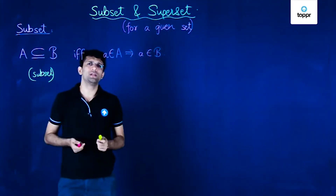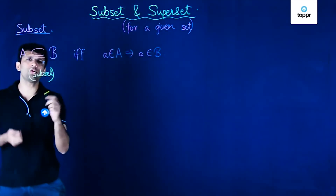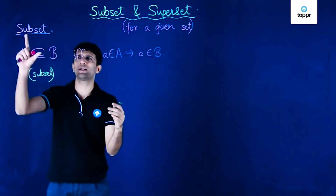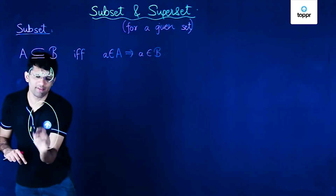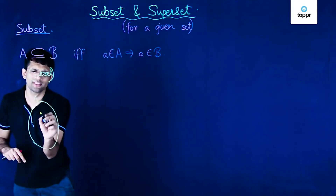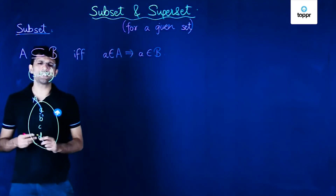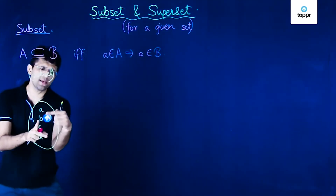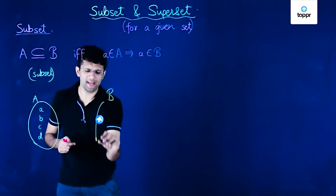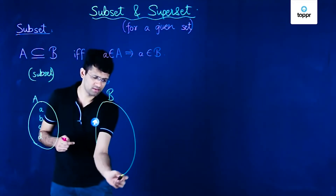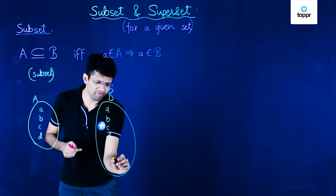Now let us look at the Venn diagram concept related to subsets. Let us say that set A is denoted by this Venn diagram and has just four elements: small a, small b, small c, and small d. Let us now take a set B which contains elements a, b, c, d, f, and k.